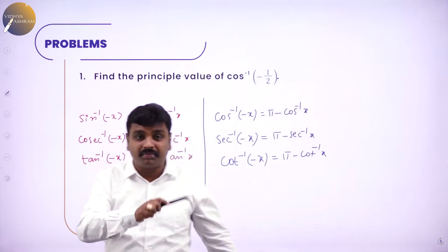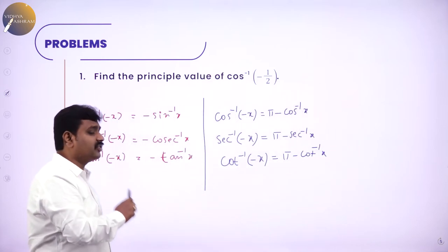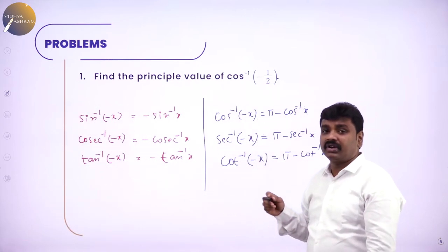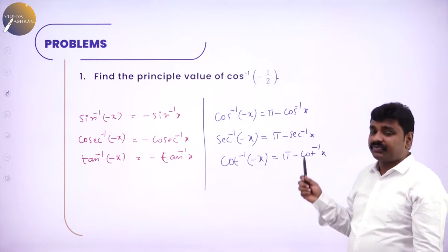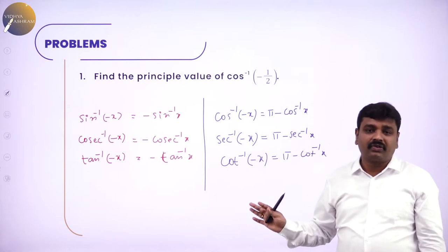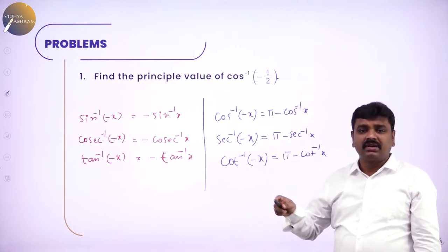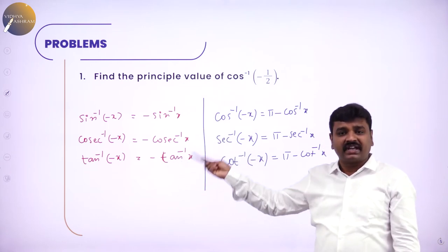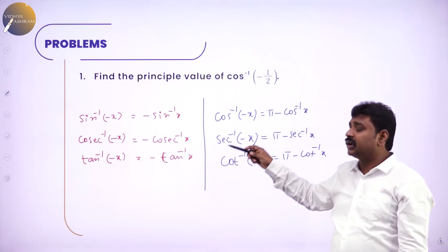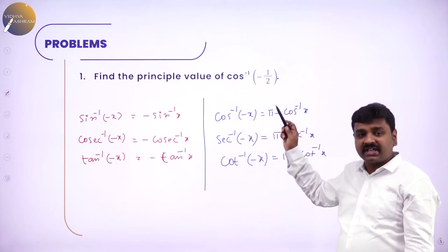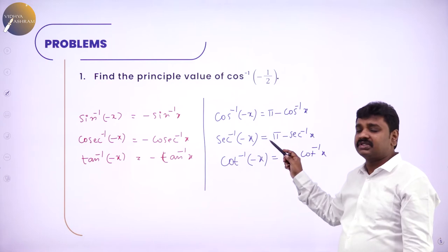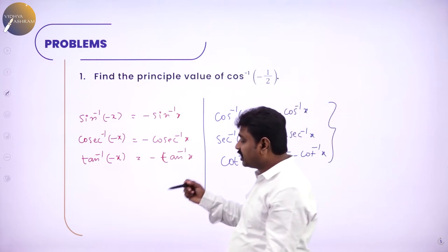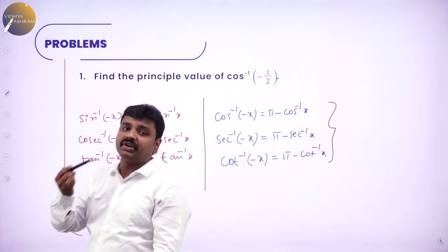Without fail, first memorize and become thorough with the basics — then the problems become easier. When basics are not strong you will struggle. What is sin inverse(−x)? Minus comes out: −sin inverse x. Cosecant inverse(−x): −cosecant inverse x. Tan inverse(−x): −tan inverse x. But cos inverse(−x): π − cos inverse x. Secant inverse(−x): π − secant inverse x. Cot inverse(−x): π − cot inverse x. Please memorize these and become thorough, then we will solve problems.